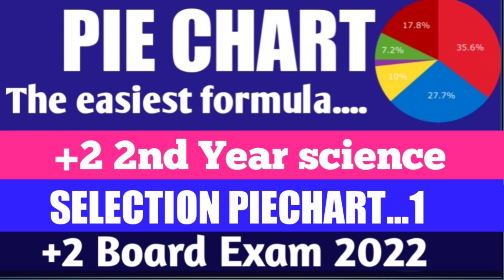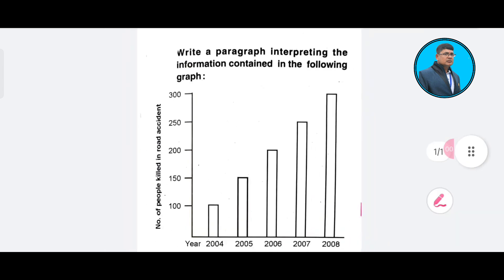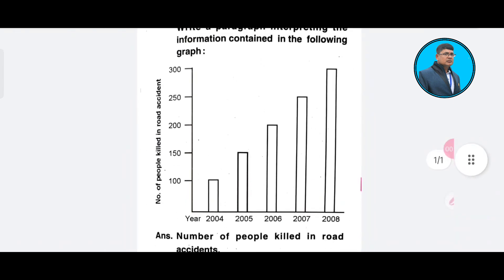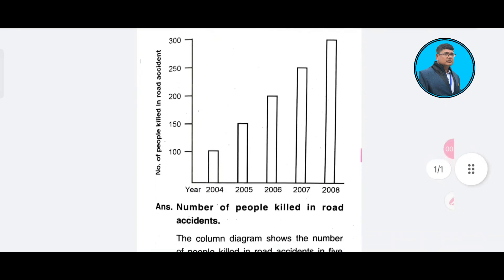So, let us see the PDF. Right paragraph — interpreting the information contained in the following graph. First of all, data is interpreted. I will try to see the data.